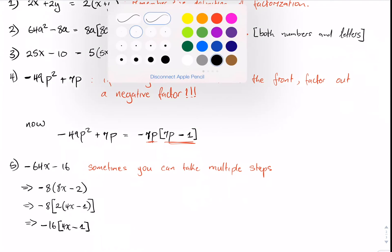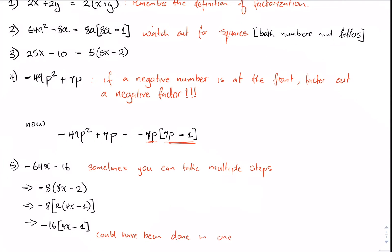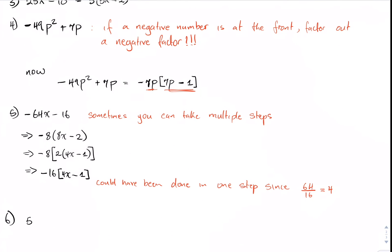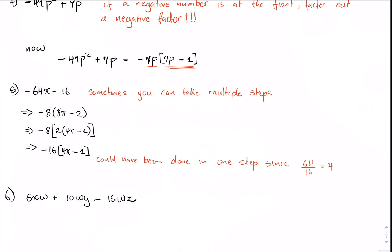Example six: 5xw plus 10wy minus 15wz. Looking at these three terms, we recognize that the common factor is 5w. Factoring out 5w gives us 5w times x plus 2y minus 3z.